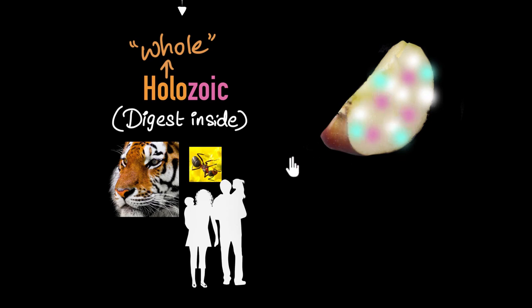And then once it goes into your body, then your digestive system breaks it into its constituent particles. That's the whole idea behind holozoic. These are the animals that digest their food inside their body. Now, in order to be a holozoic, you need to have a pretty good digestive system so that you can break down whatever you eat inside your body.